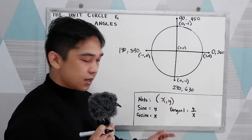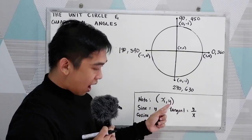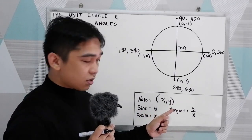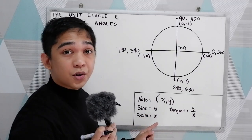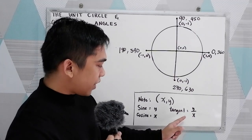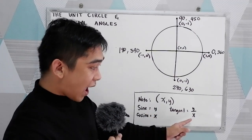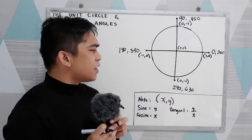Now, these are the following that you need to know. Note: in our coordinate x and y, our sine represents our ordinate — our y. And our cosine represents our abscissa — our x. And tangent is the ratio of sine over cosine, or y over x.